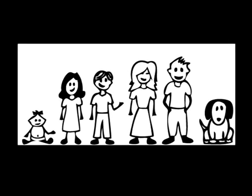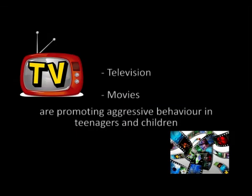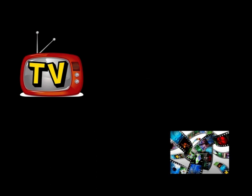Family and cultural causes: a person is closely related to his family from birth, and the behavior and thoughts of a person are influenced by his family. In families where there is no parental affection, or where members are constantly involved in conflicts or criminal activities, the child grows up imbibing these qualities and ends up committing crimes themselves. Television and movies are promoting aggressive behavior in teenagers, and bad habits like lying, stealing, and cheating arise from watching such programs.